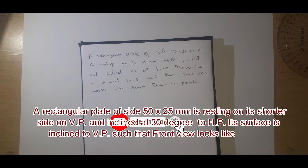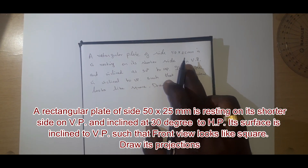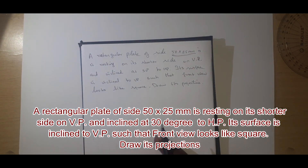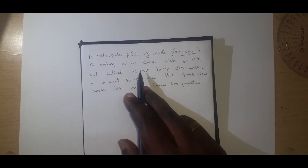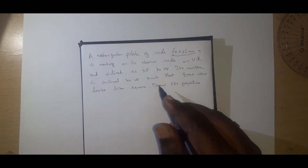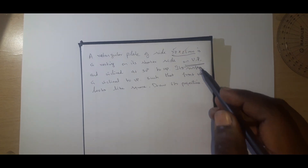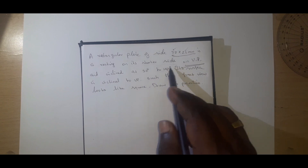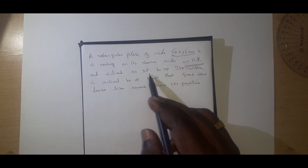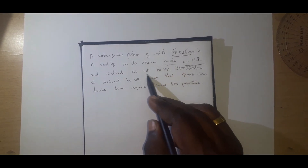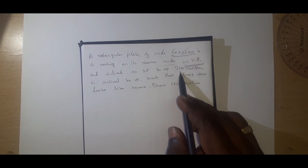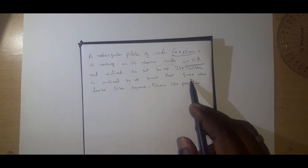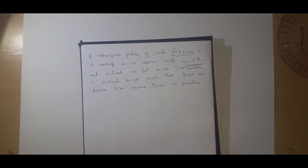Hello students, this is another typical problem on planes. A rectangular plate of side 50×25mm — it has two sides, a longer edge of 50mm and a shorter edge of 25mm — is resting on VP with its shorter side. The shorter side is inclined 30° to HP. Its surface is inclined to VP such that the front view looks like a square. Draw its projections.